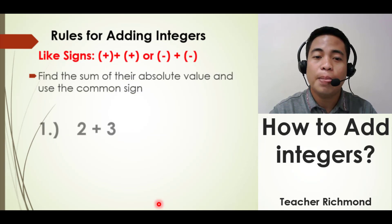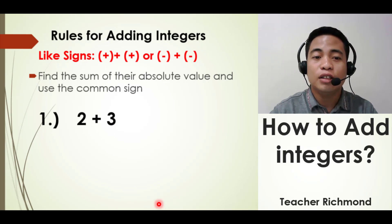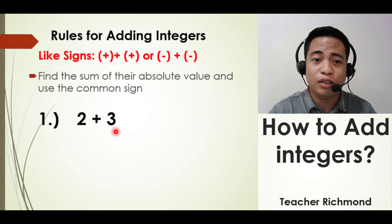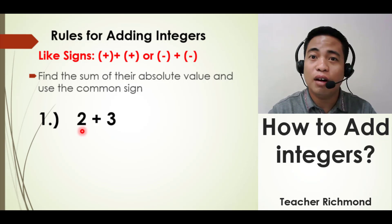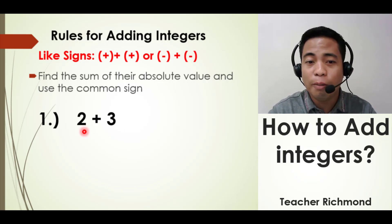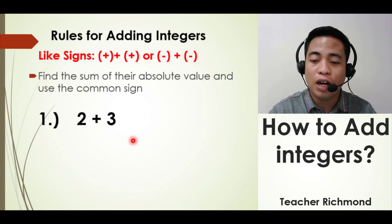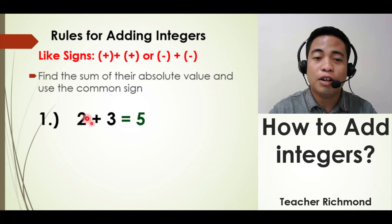Using the first rule — like signs — our first example is positive 2 plus positive 3. Get the sum of their absolute values: the absolute value of positive 2 is 2 and the absolute value of positive 3 is 3, so 2 plus 3 equals 5. Our answer is positive 5 because the common sign of 2 and 3 is positive.